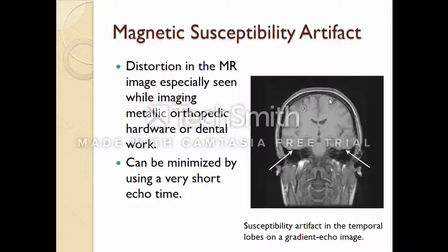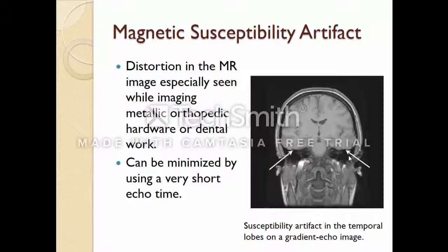Along with its benefits, there are also some artifacts in susceptibility-related imaging, such as magnetic susceptibility artifacts. This artifact is caused by distortion in MR imaging, especially seen when imaging metallic orthopedic hardware or dental work. As you can see in the picture, here is dental work that distorts the image. This artifact can be minimized by using a very short echo time, a proton-density-weighted method, but it cannot be completely avoided.